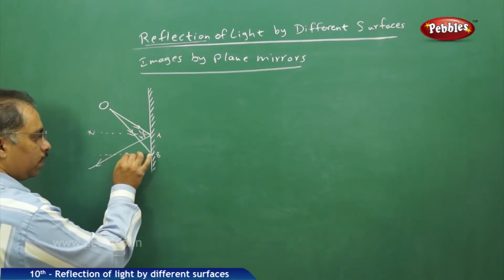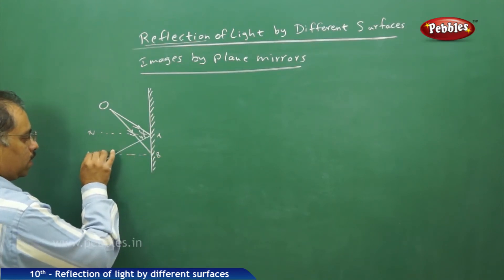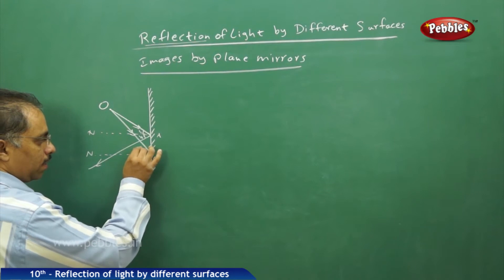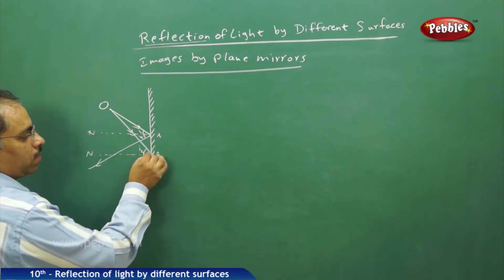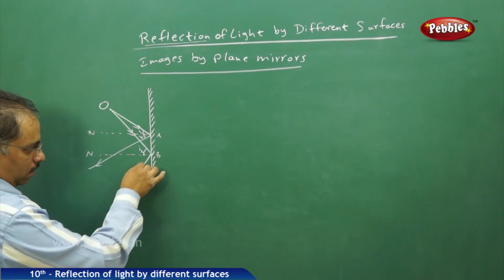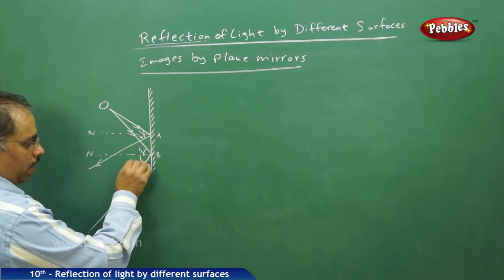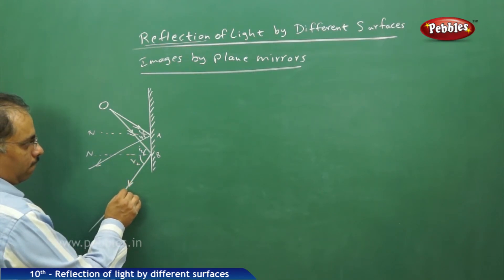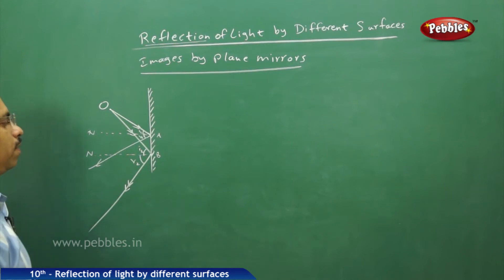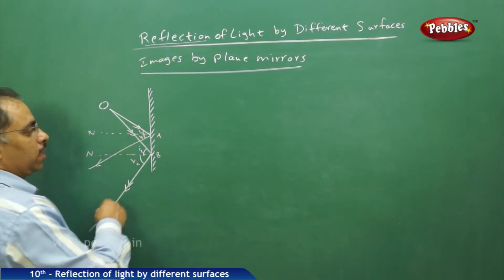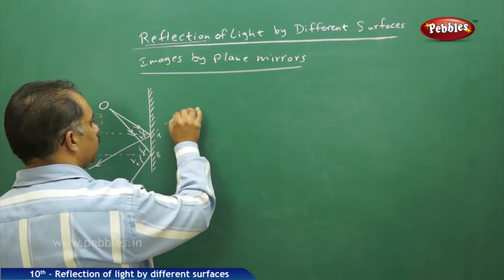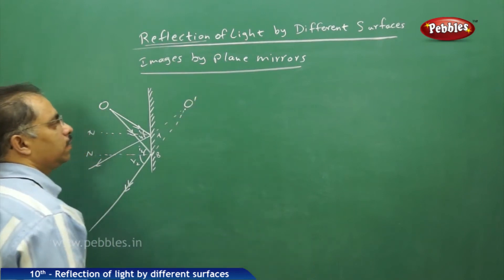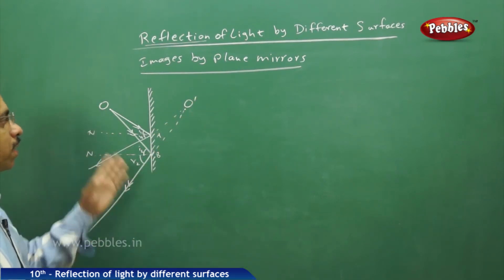Similarly, I will draw one more normal at point B. B-n is the normal at the point of incidence B. This is the angle of incidence I2, and here I get the reflected ray. Now these two rays are going in this direction. What I will do is extend them backward, and this gives us point O dash, which is the image of the point object O.